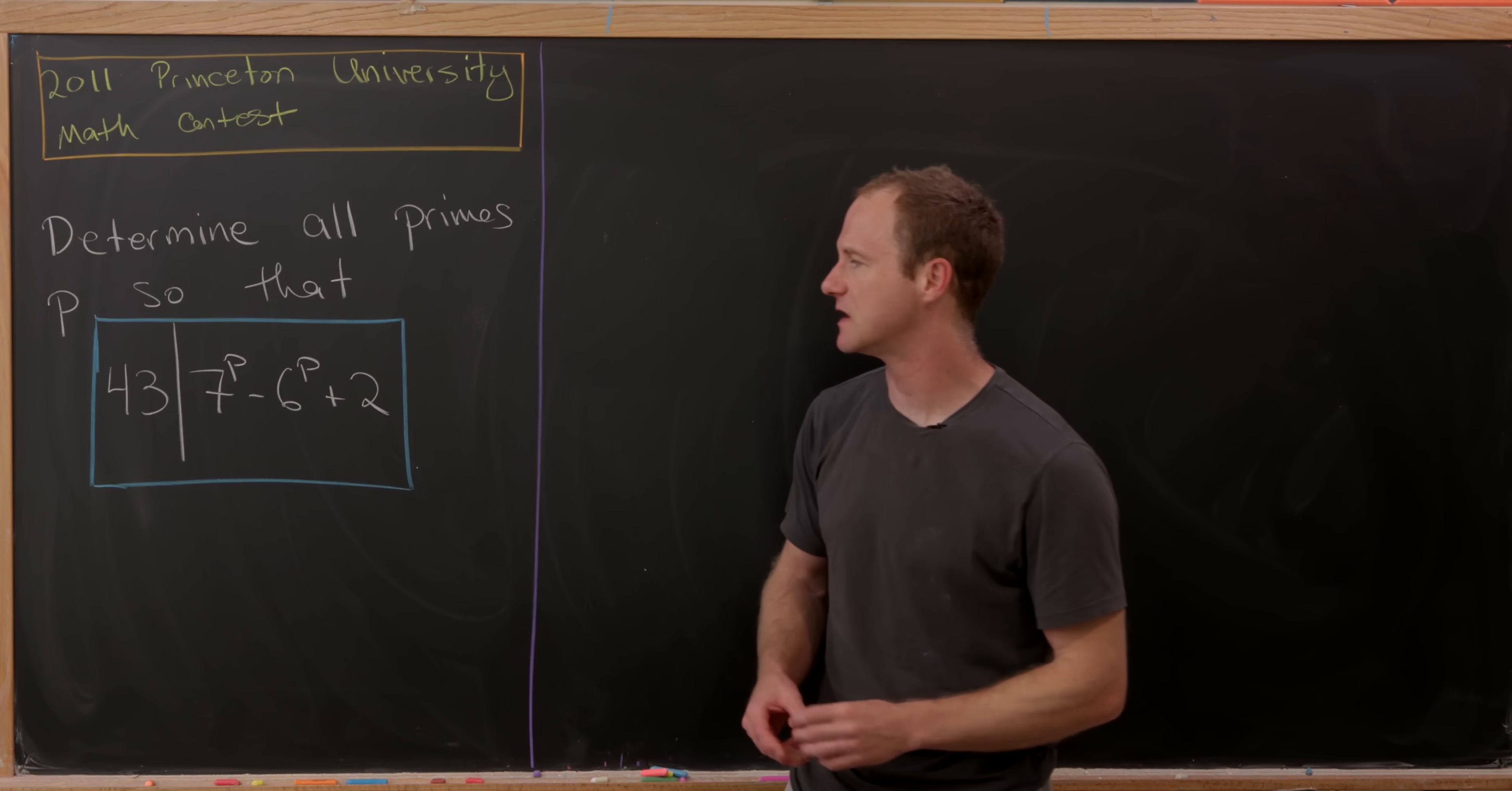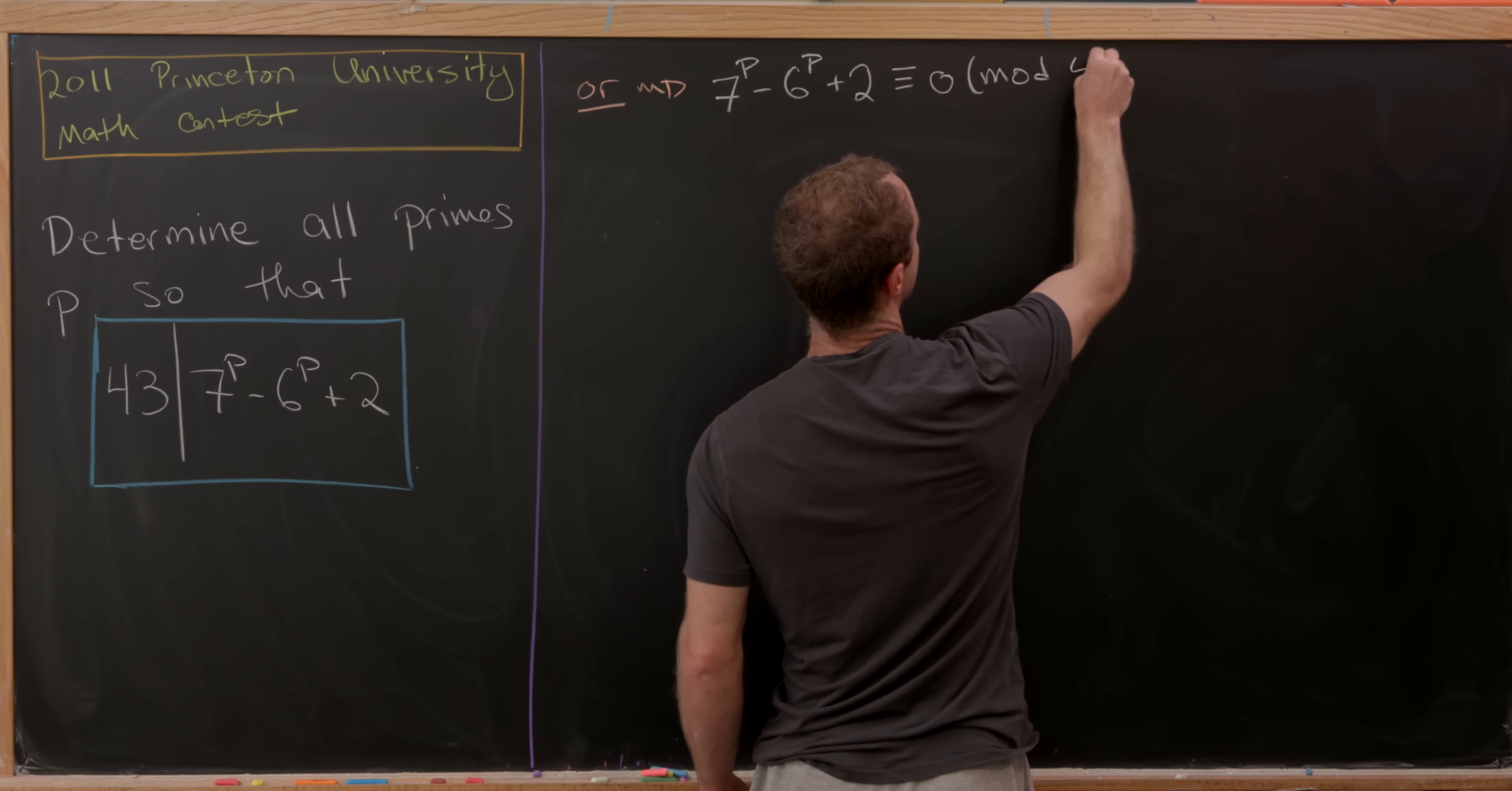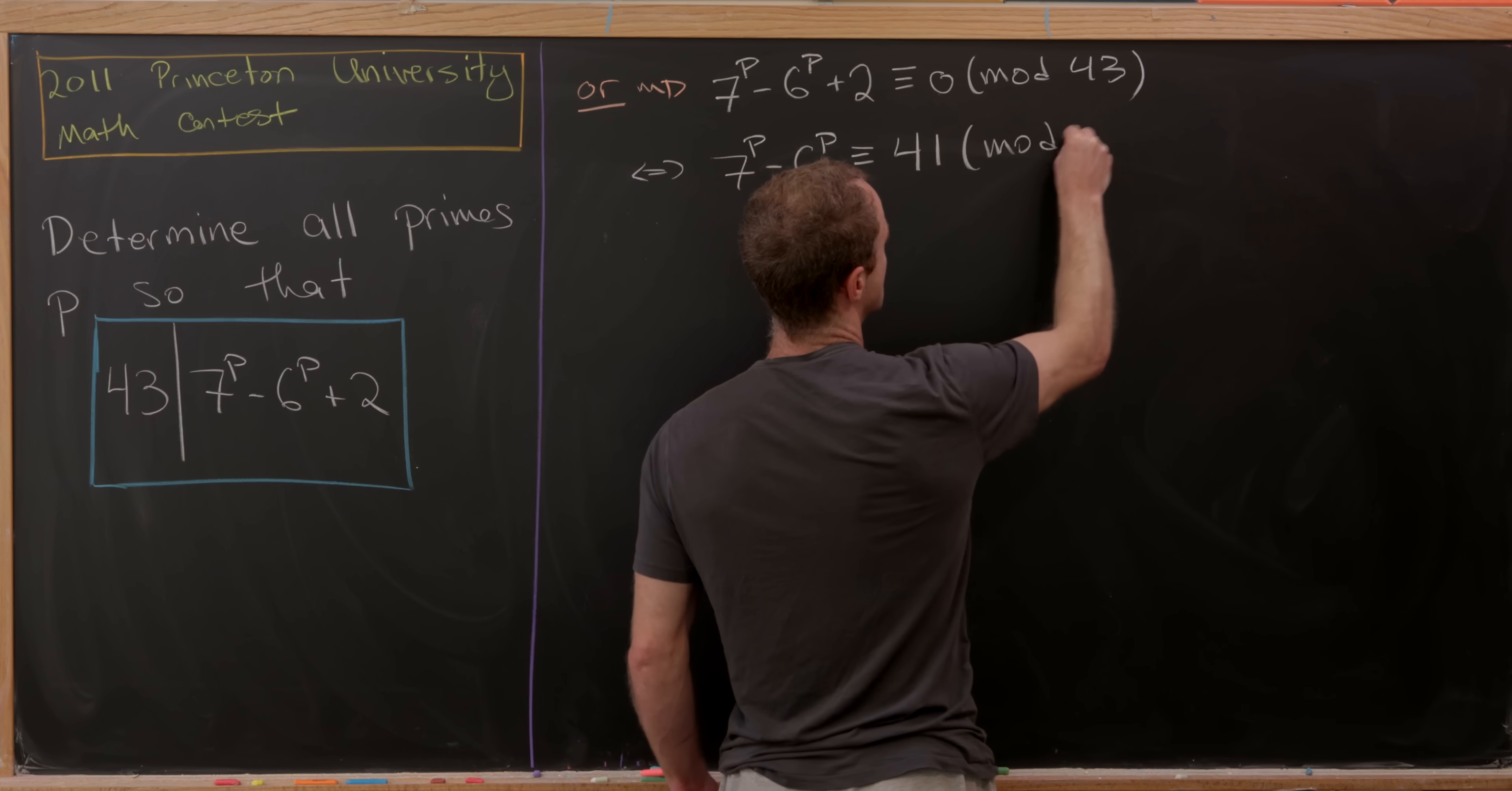In other words, 7^p - 6^p + 2 is a multiple of 43. We're going to start by putting this into the language of modular arithmetic. This is equivalent to saying that 7^p - 6^p + 2 is congruent to 0 modulo 43. We can subtract 2 from both sides and use the fact that -2 is congruent to 41 mod 43 to rewrite this as 7^p - 6^p is congruent to 41 modulo 43.